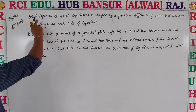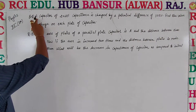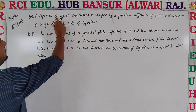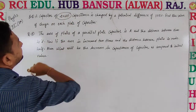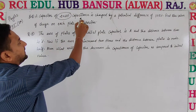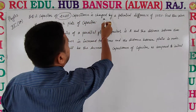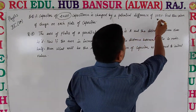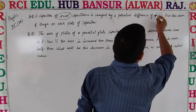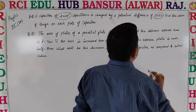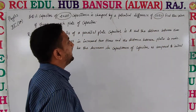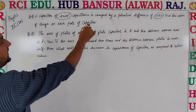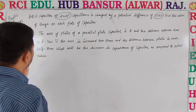So the first problem is: a capacitor of 20 microfarad capacitance is charged by a potential difference of 10 kV. Find the value of charge on each plate of the capacitor.